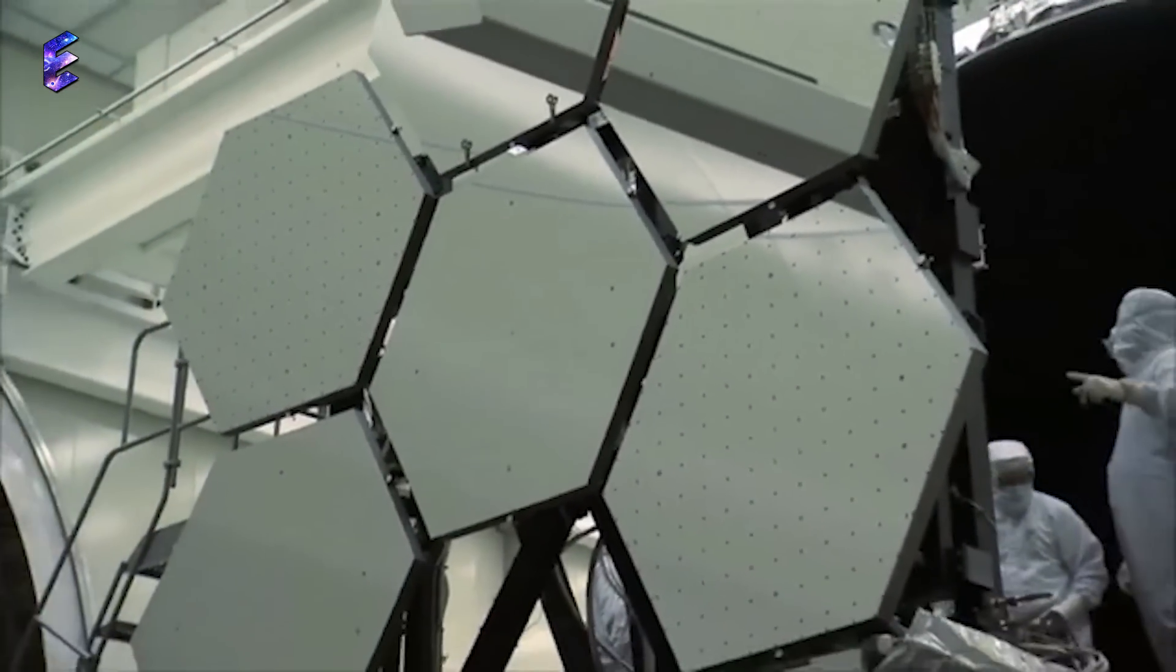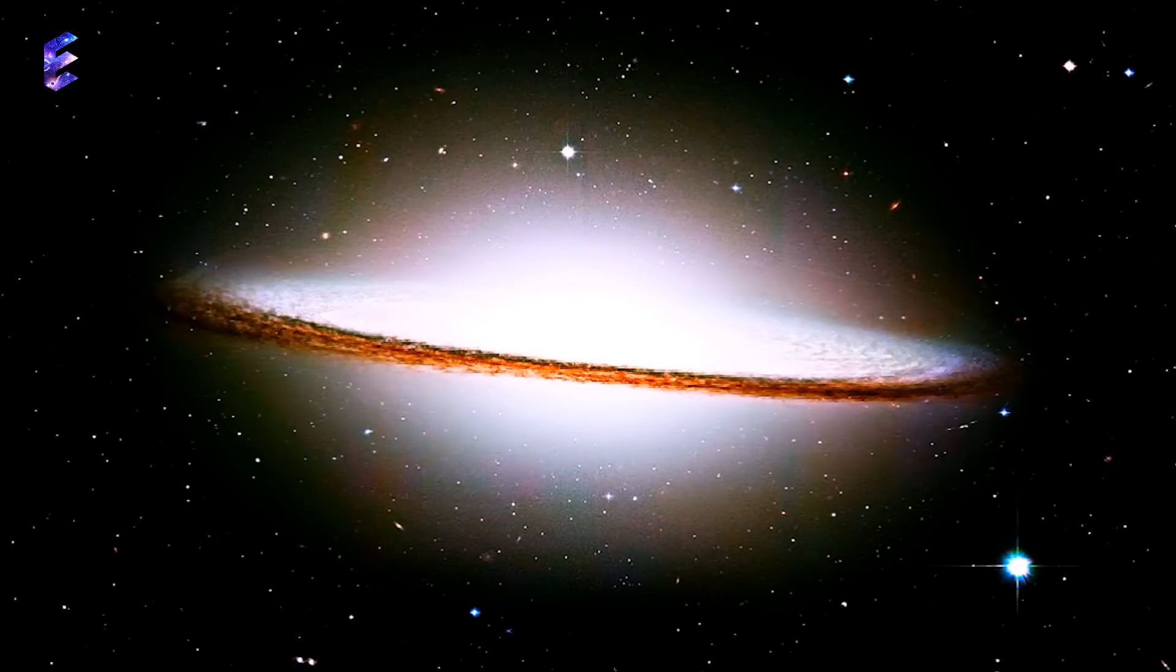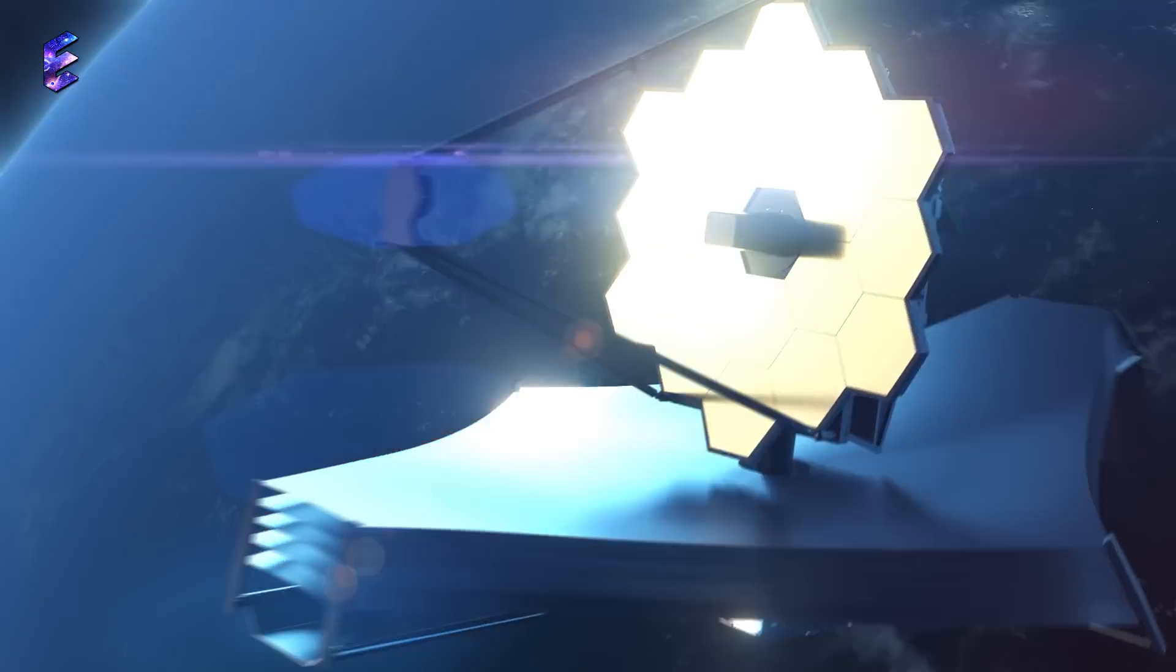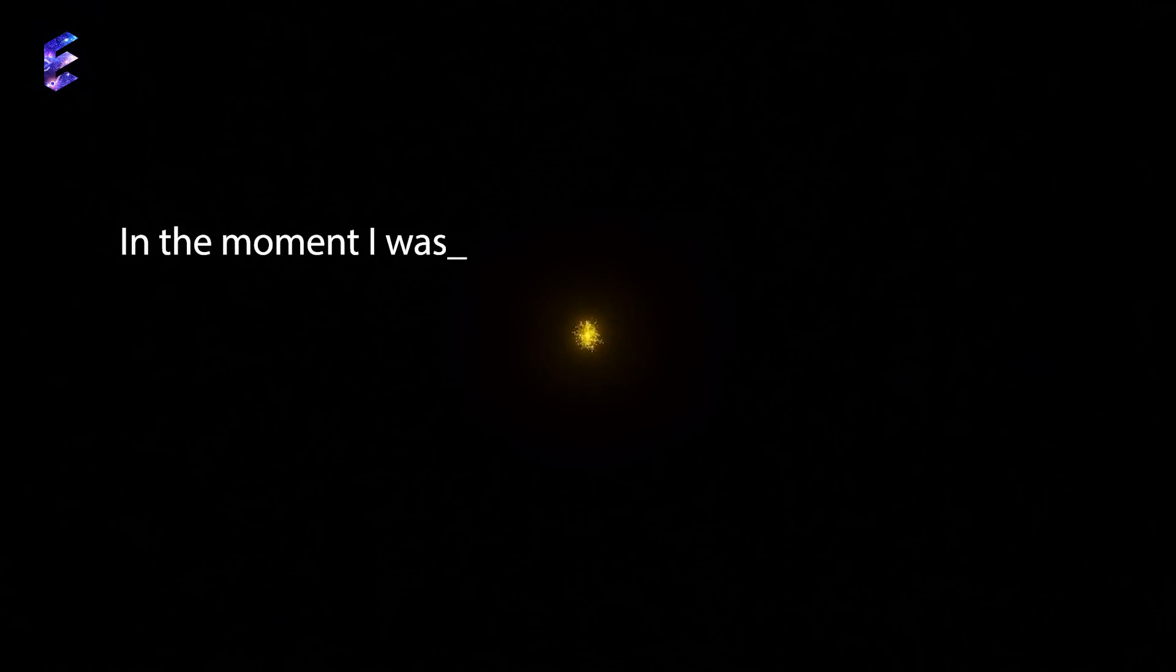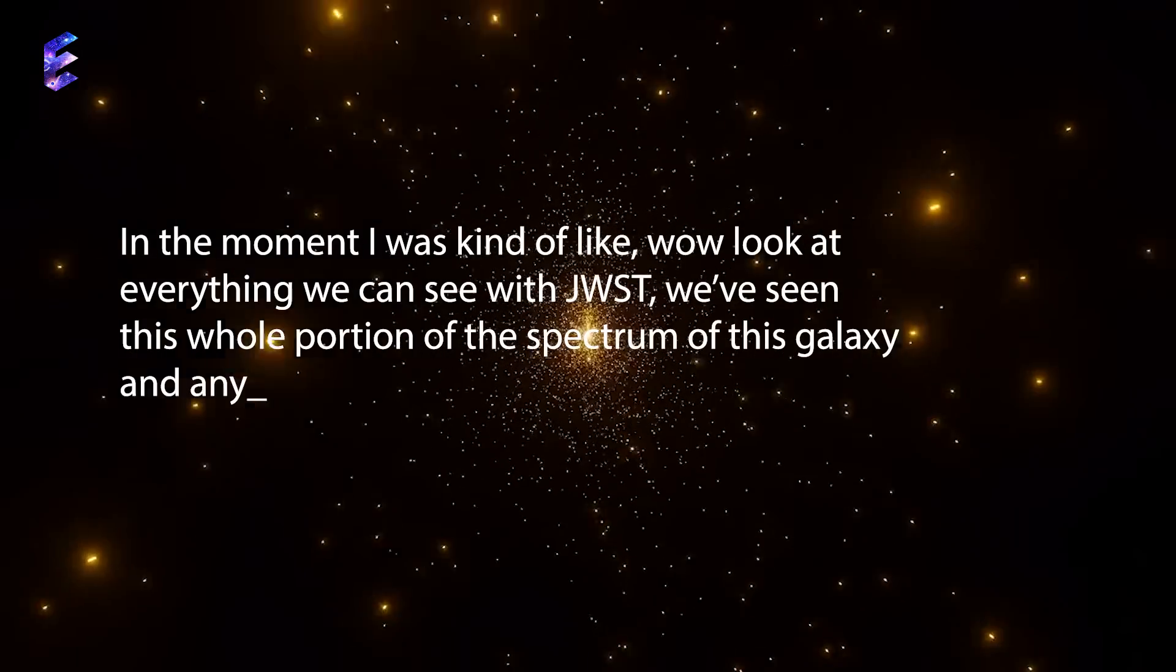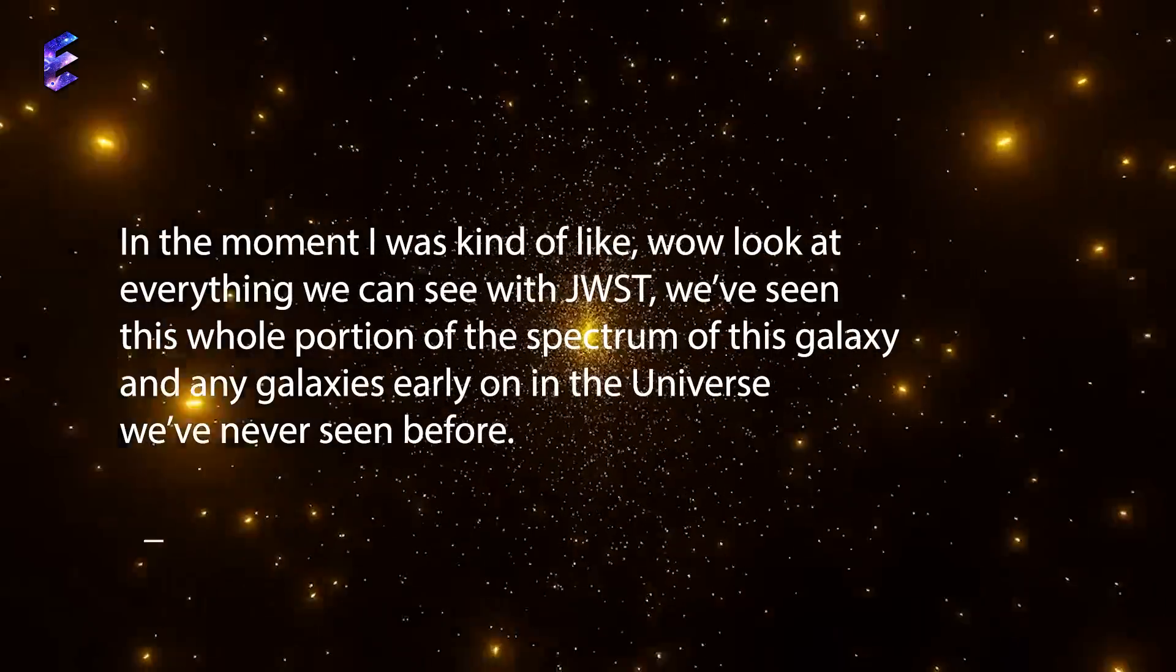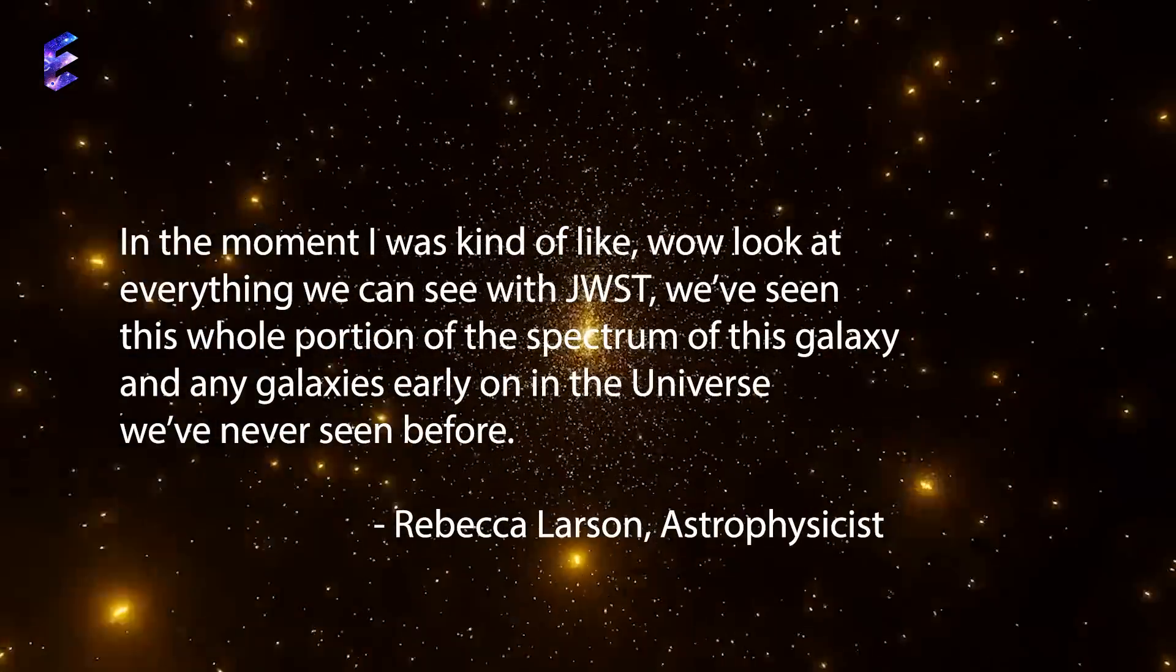So when JWST came along, CEERS-19, the brightest of the Hubble galaxies from this epoch, was an obvious target. The telescope stared at the galaxy for just one hour, with all four of its instruments, but returned a wealth of data. In the moment, I was kind of like, wow, look at everything we can see with JWST. We've seen this whole portion of the spectrum of this galaxy, and any galaxies early on in the universe, we've never seen before, said astrophysicist Rebecca Lawson. I was just overwhelmed by the amount of information. But then she noticed something she wasn't quite expecting.